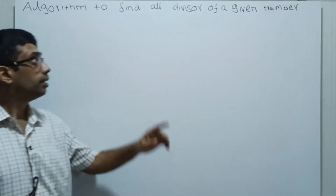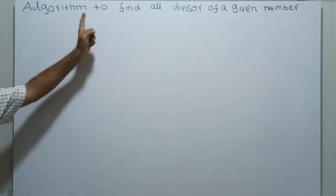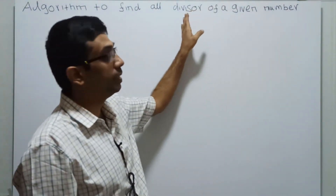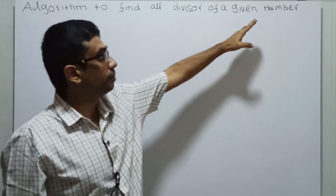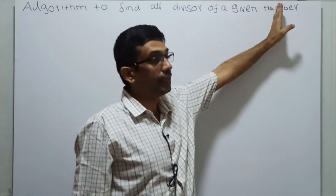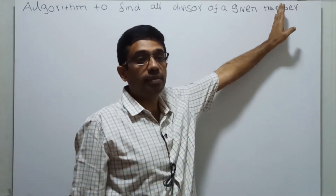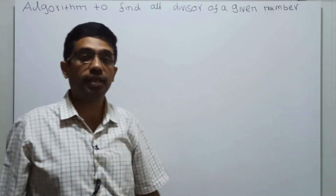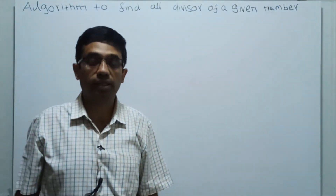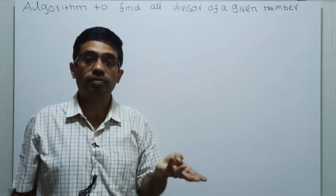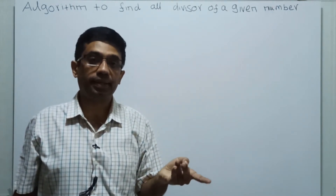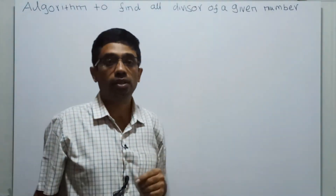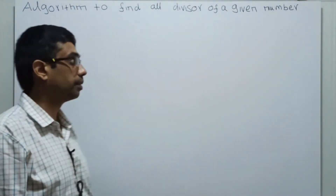Hi friends, we are going to write an algorithm to find all divisors of a given number. The divisor means the number which divides the given number and yields the remainder equal to 0. For example, if we take the value 6, then 1, 2, and 3 will completely divide 6. So these are all the divisors. To print this, we are going to write an algorithm.